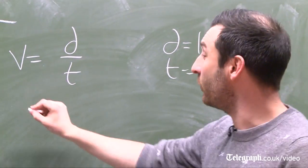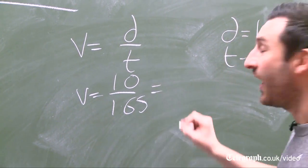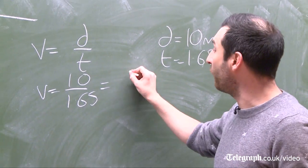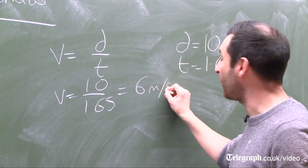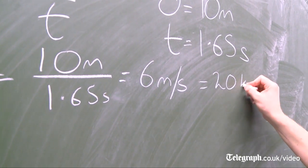Putting that into our equation we come up with 10 divided by 1.65 and that gives us a velocity of 6 metres per second, and that's roughly 20 kilometres per hour.